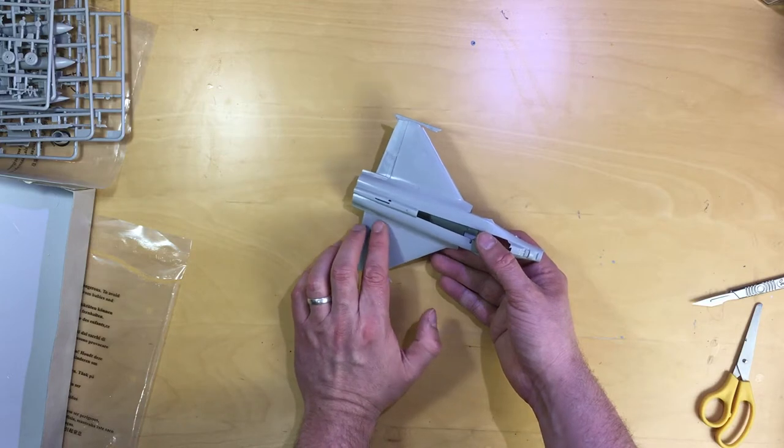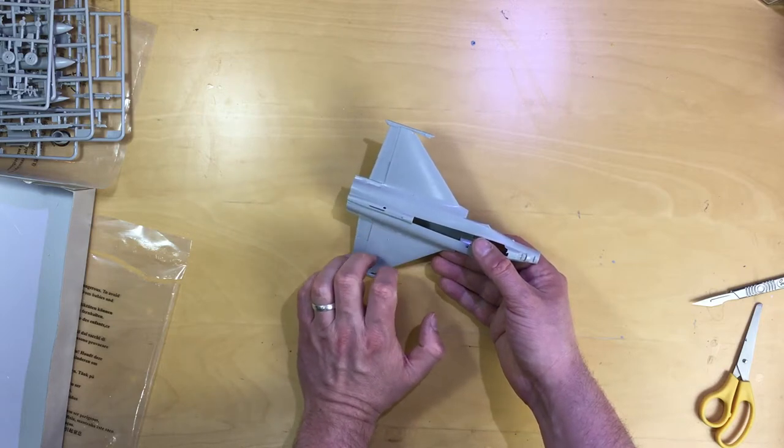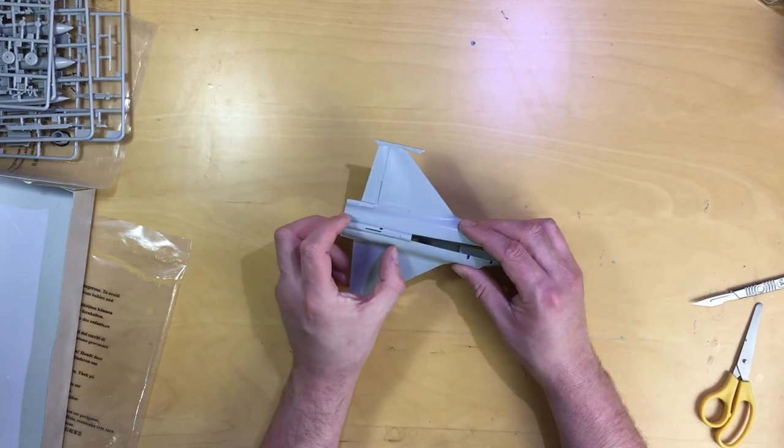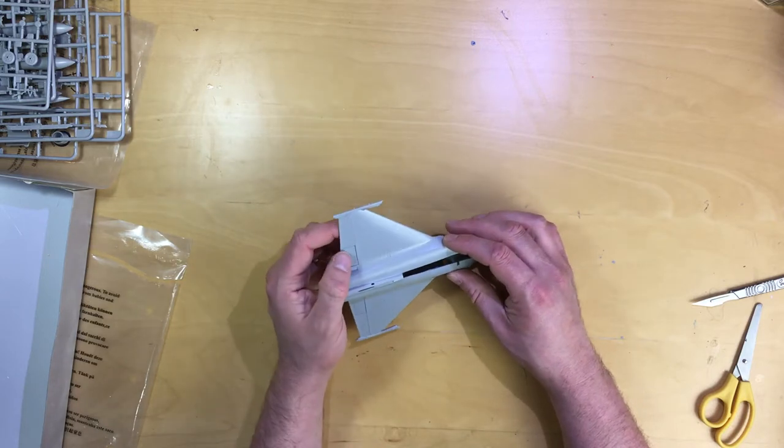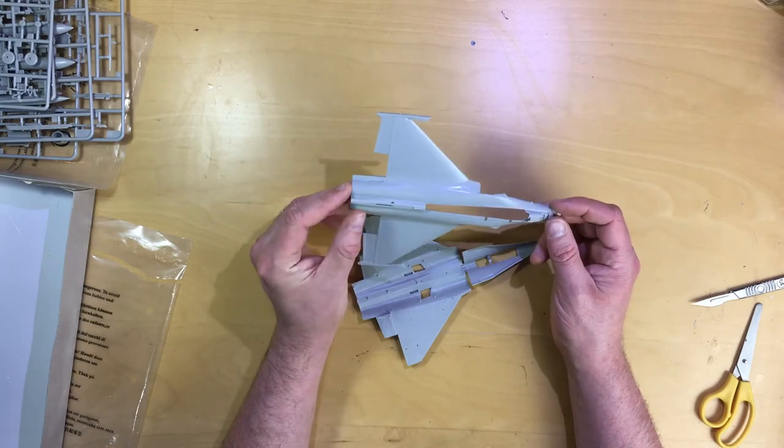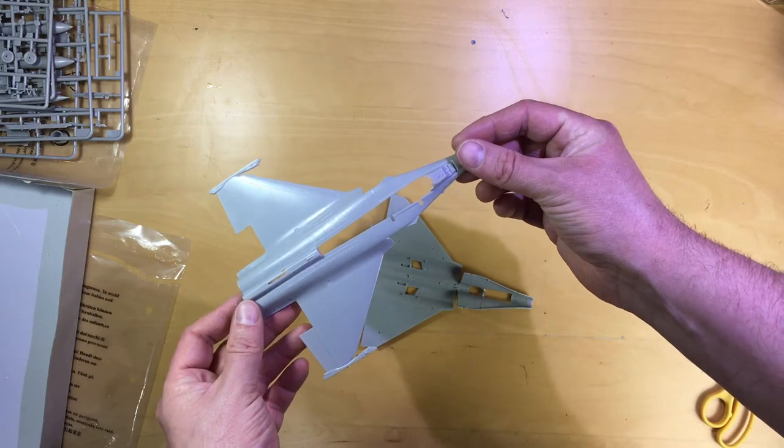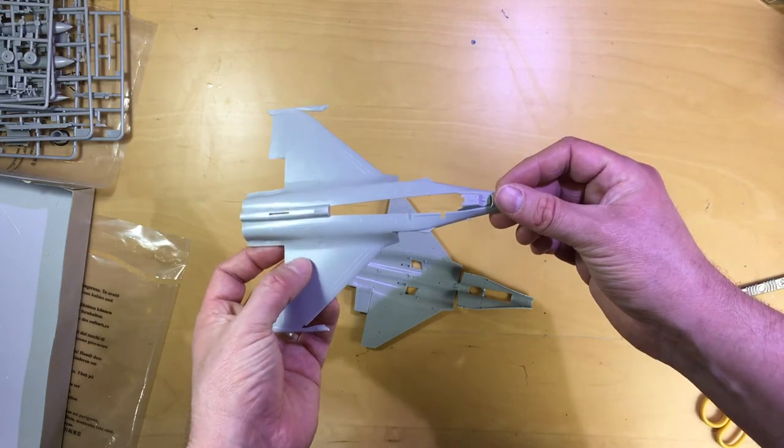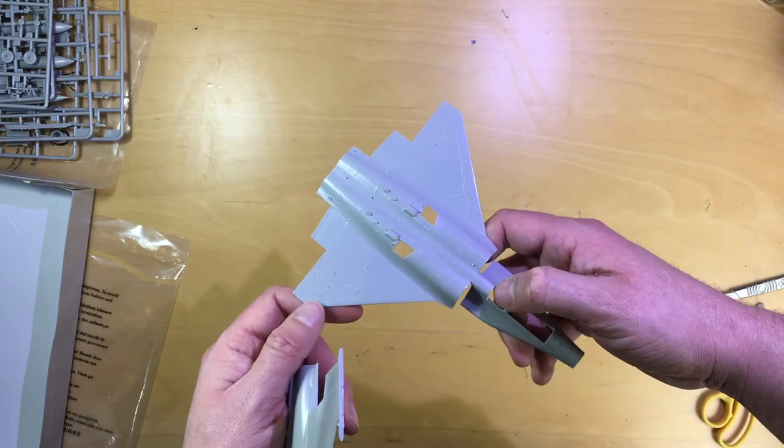The thing which is really nice on this is that with the Rafale, you've got all these curves just around here where the wing meets the fuselage - that's all molded in one piece. You're not going to have any seam joints that you're going to have to sort out, so that's always a bonus. The actual detail itself is quite nice. It's got some nice scribed recess panel lines there, and I think it'll take a wash quite nicely.